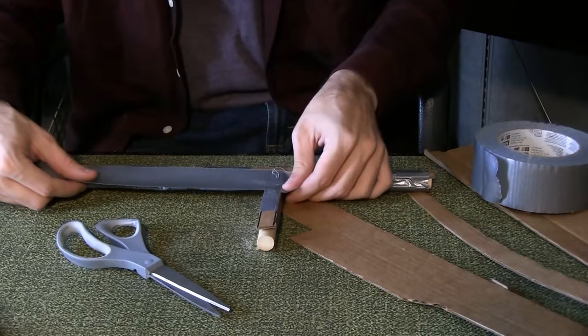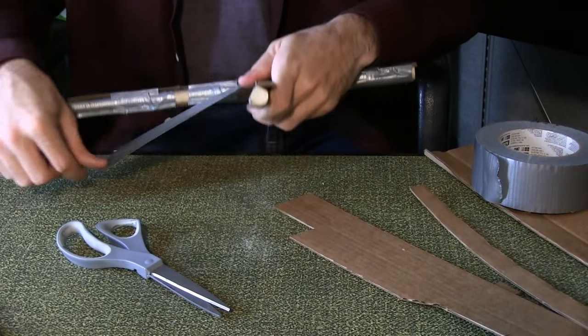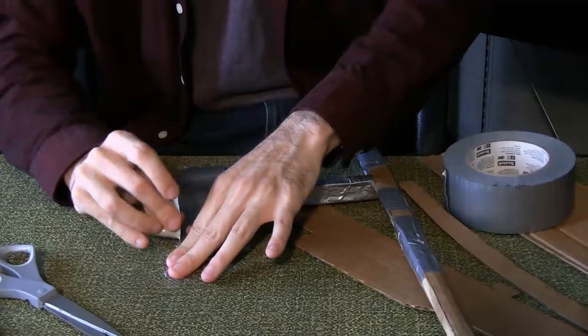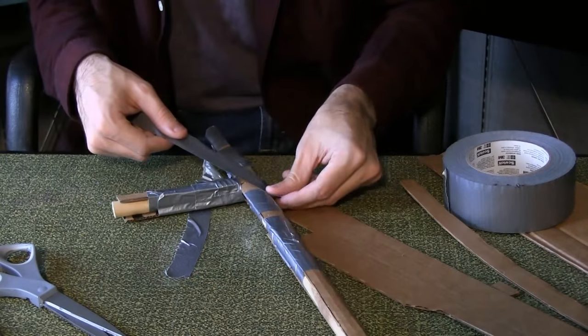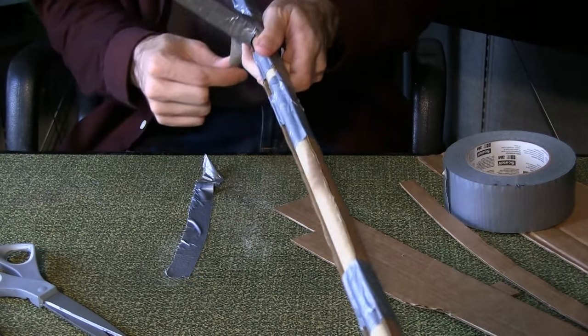Wrap the intersection point with several layers of duct tape for extra stability. Rip a length of duct tape down the middle and use the narrow strips to cross-lash the intersection point.